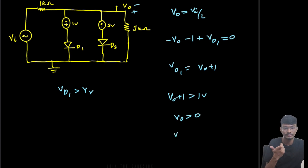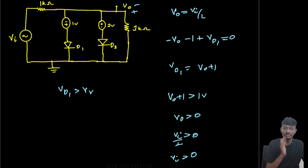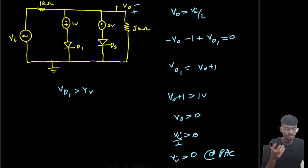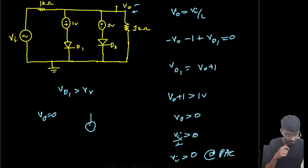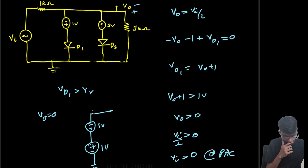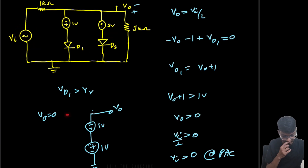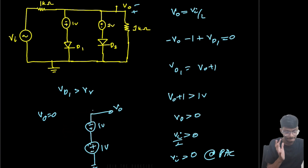Since Vo = Vi/2, the condition Vo > 0 means Vi > 0. So at the positive half cycle of the sine wave, D1 turns on. Drawing the equivalent circuit with D1 on and D2 off, applying KVL gives Vo = 0 volts. Therefore, for the entire positive half cycle, Vo is always 0.